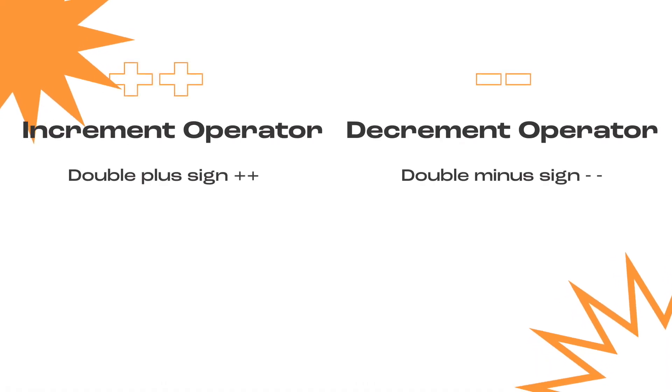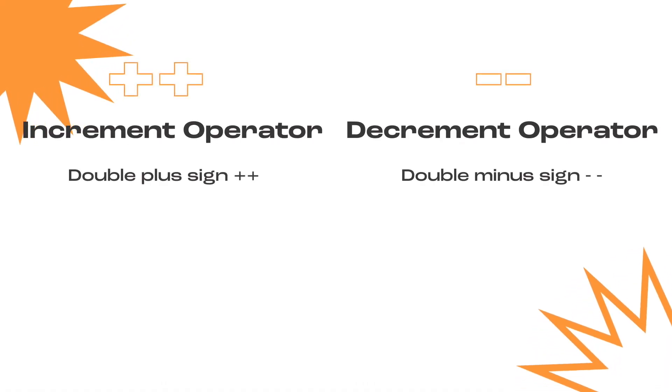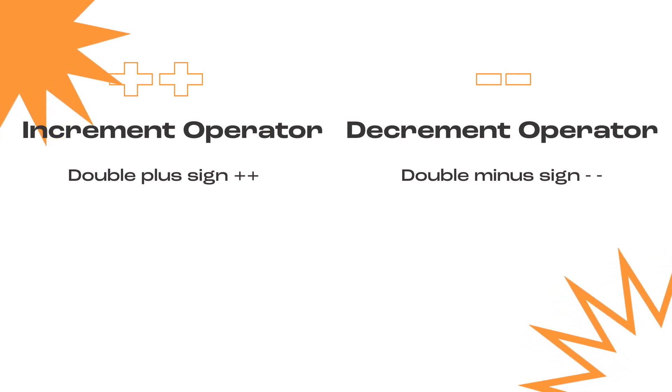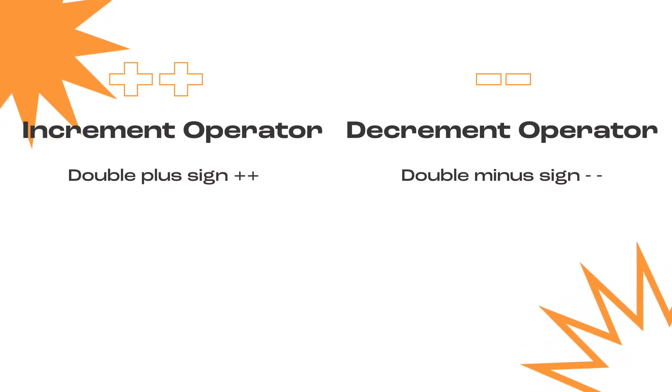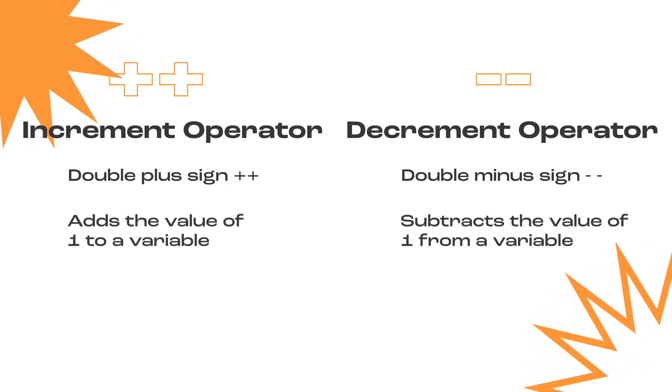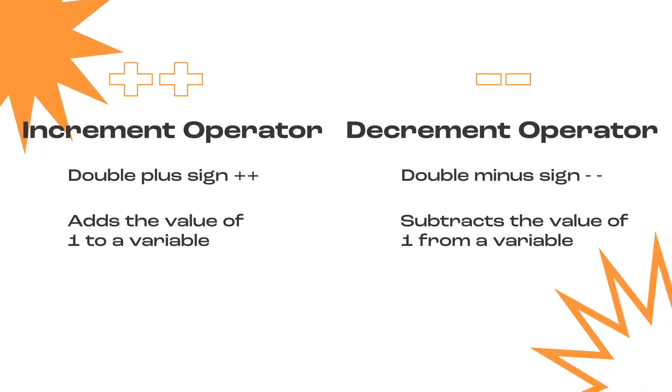If you're not too familiar with these operators, I've got you covered. The increment operator is the double plus signs, while the decrement operator is the double minus signs, and they allow you to either increase or decrease a value in JavaScript.